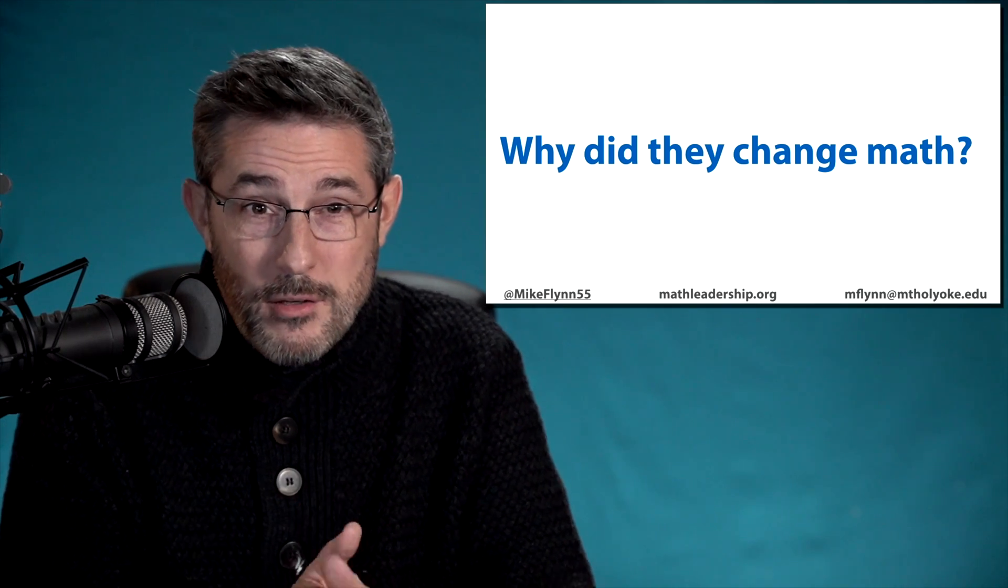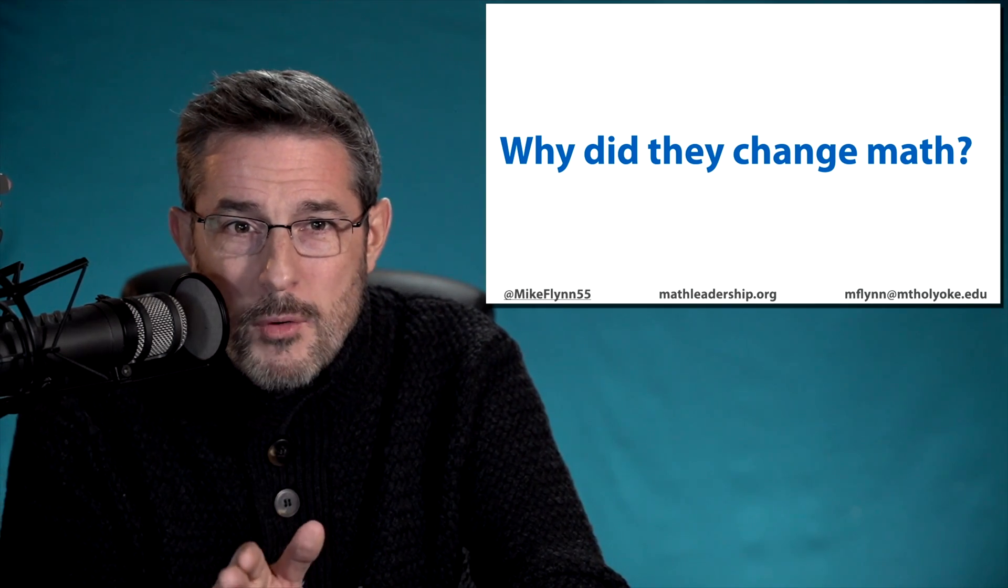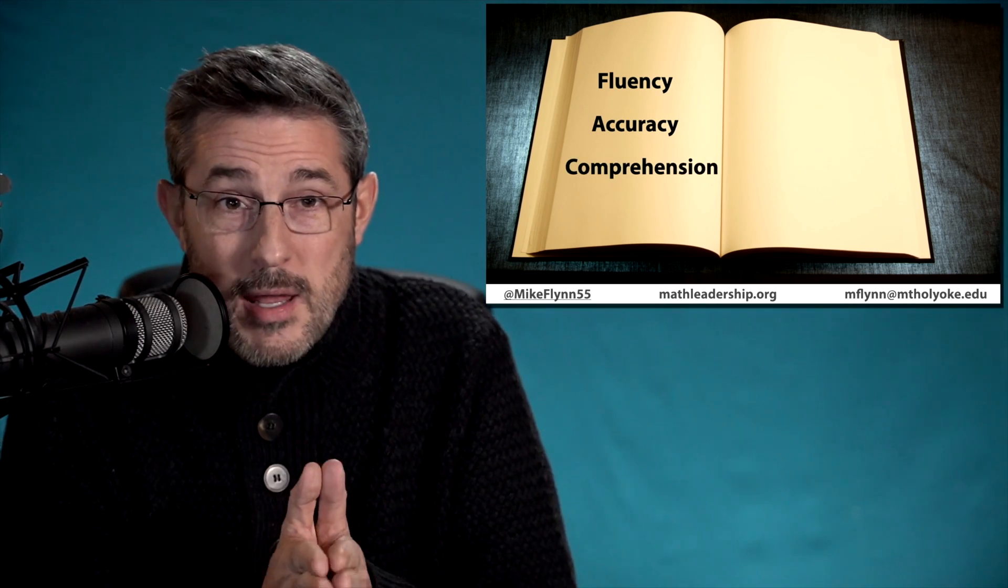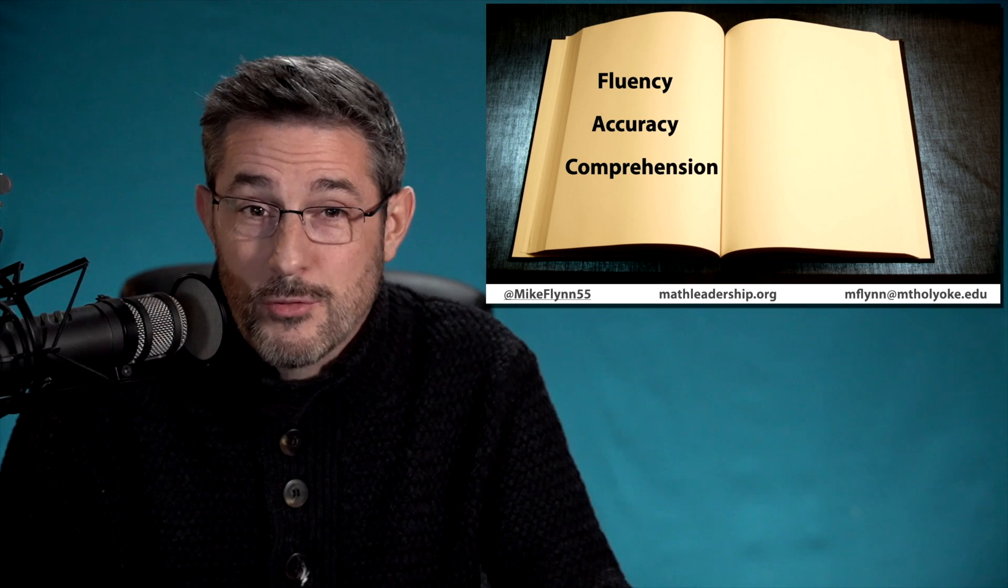But I think I found a great way to do this. So let's think about the way we teach reading. In reading, when kids are learning to read, we focus on three primary areas. We check on how well the kid's reading in terms of fluency, how well they're reading in terms of accuracy, how many of the words they can read correctly on a page, and of course, how well their comprehension is, how well they understand what's read on the page.